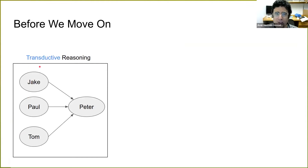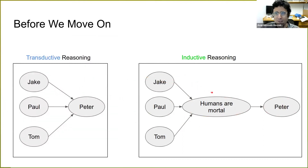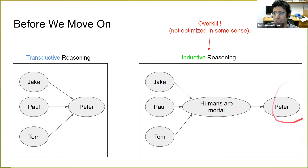As a recap: in transductive reasoning, we directly go from observations to the conclusion without inferring any rule from the data. But in deductive reasoning, we observe the data, a rule is inferred from the data, and then the rule is applied — to Peter in this case. If we look at these two ways of reasoning side by side, you may notice that deductive reasoning is an overkill for the problem, because inferring a general rule from data might be energy-consuming and time-consuming.